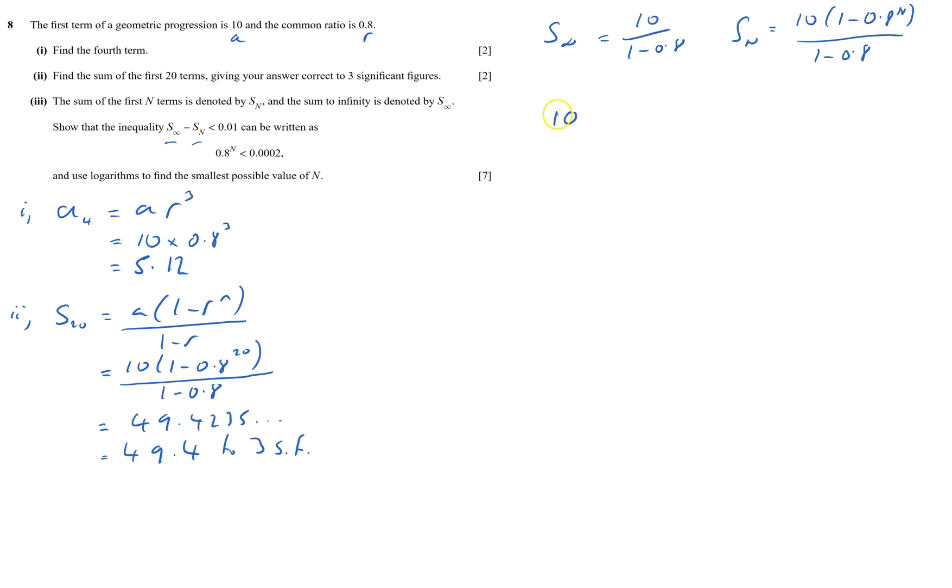So 10 over 0.2 minus 10 lots of 1 minus 0.8 to the power of n over 0.2 is less than 0.01. I'm going to times everything by 0.2, that gives me 10 minus 10 lots of 1 minus 0.8 to the power of n is less than 0.01 times by 0.2 is 0.002.